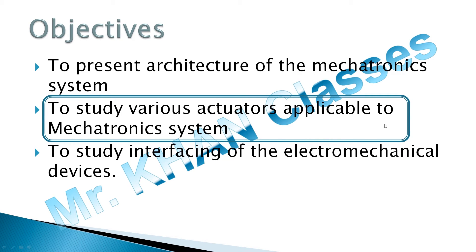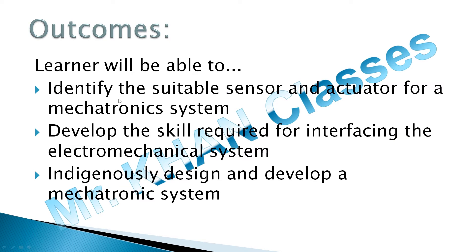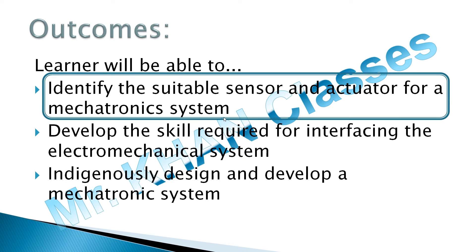Now, what will be the outcome? Again, this outcome applies to the entire six modules, but for the second series, my specific outcome is: the learner will be able to identify the suitable electrical actuators for a mechatronic system. I am not going to cover sensors here — sensors will be covered in the third series. We will see this outcome at the end of this entire series, along with the development of skill in indigenous design and development of mechatronics, which we will see further in subsequent series.